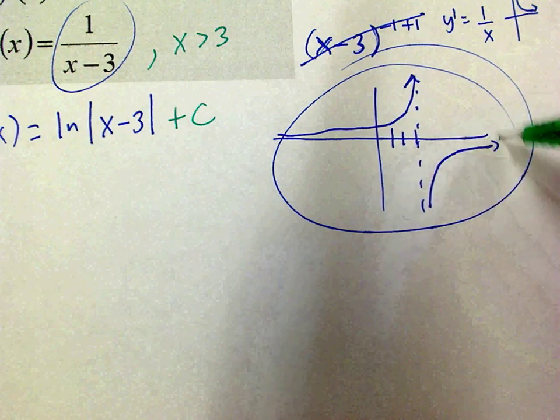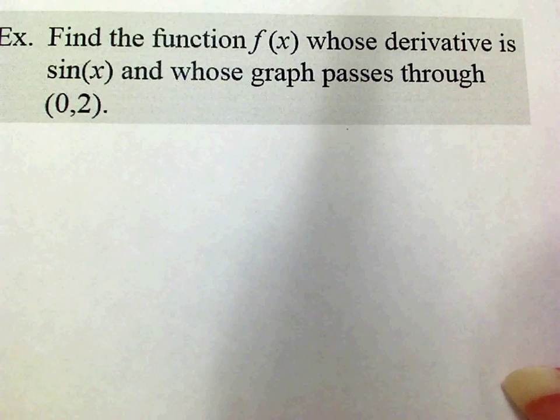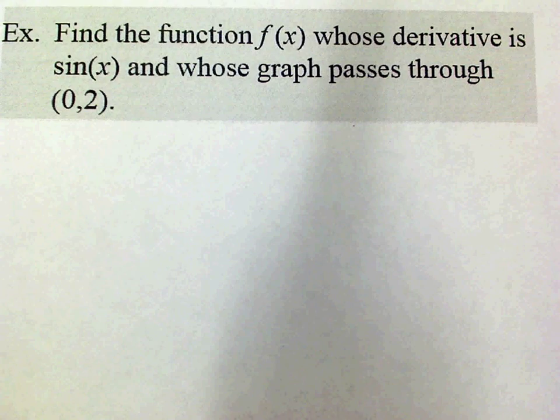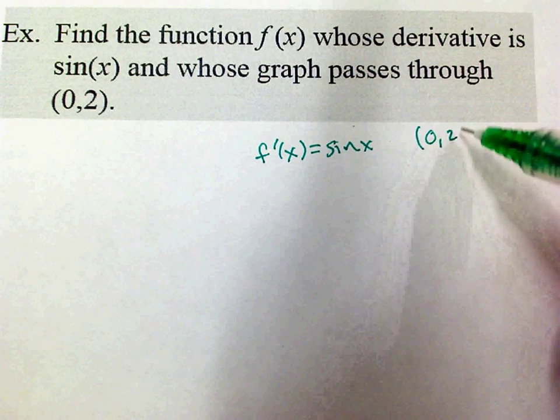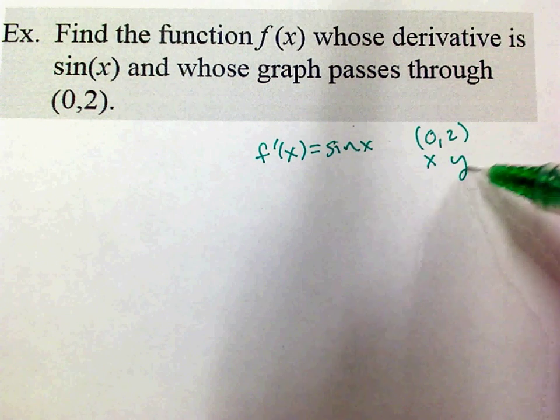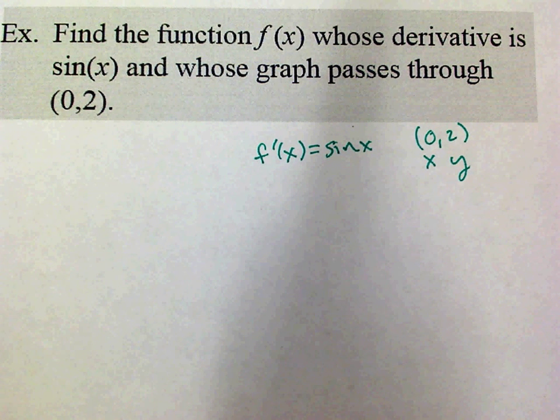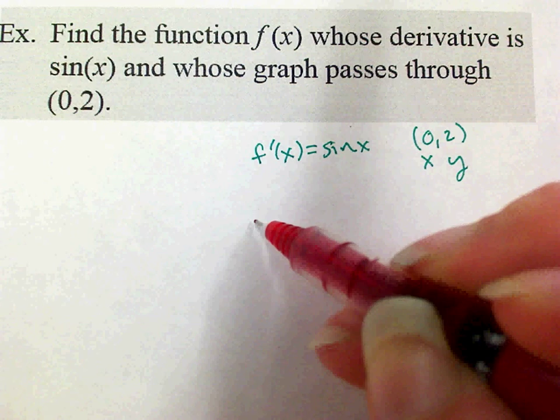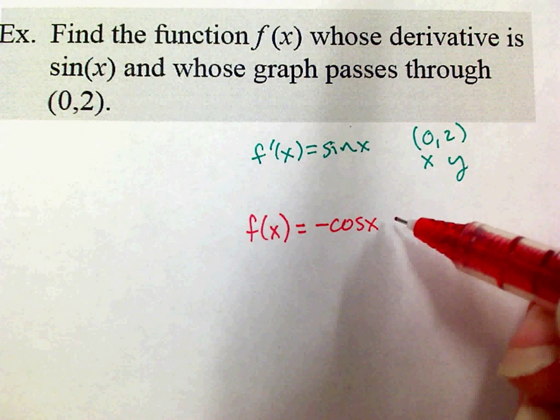Let's do this one. Find a function whose derivative is sine and whose graph passes through the point 0, 2. Find a function whose derivative is sine, so f prime of x equals sine, and that passes through the point 0, 2. This is my x, this is my y. All right, now this gives me more information, which means I can actually be more specific on my answer. What function has a derivative of sine? Negative cosine. So, negative cosine of x plus c. Good. And if you're unsure of your answer, take the derivative. What's the derivative of negative cosine? Positive sine. Good.